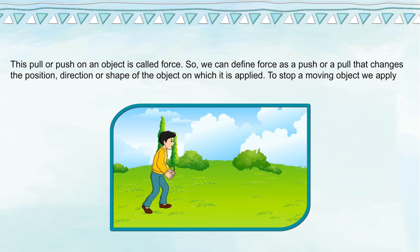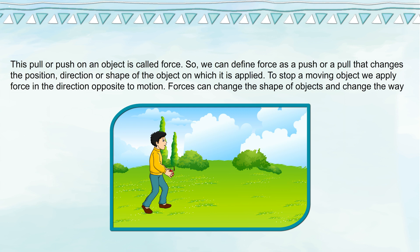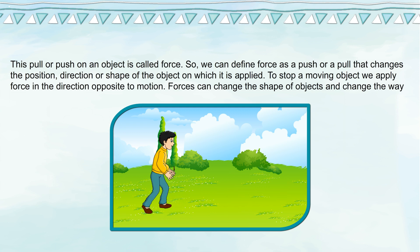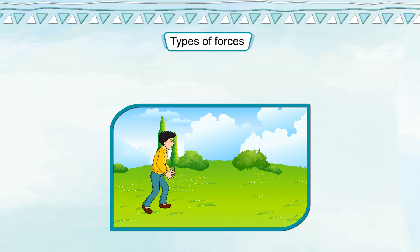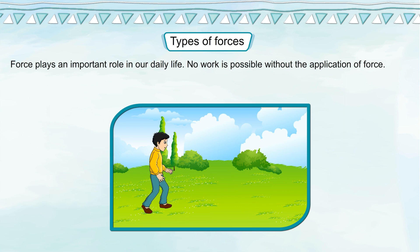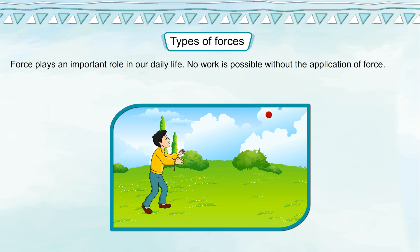To stop a moving object, we apply force in the direction opposite to motion. Forces can change the shape of objects and change the way they are moving. Force plays an important role in our daily life. No work is possible without the application of force.